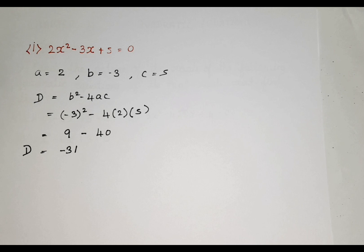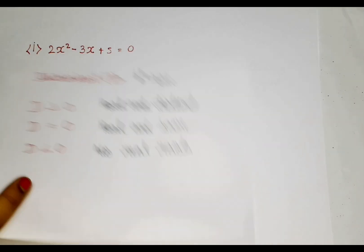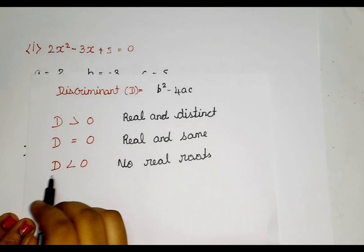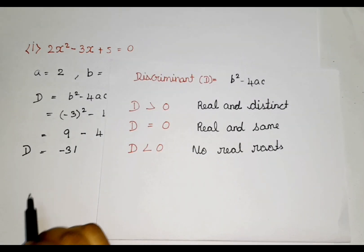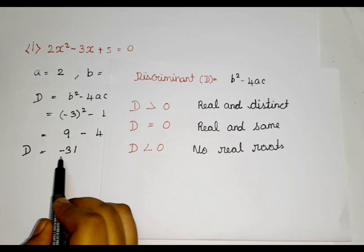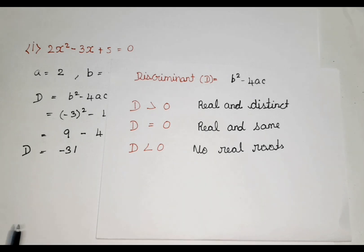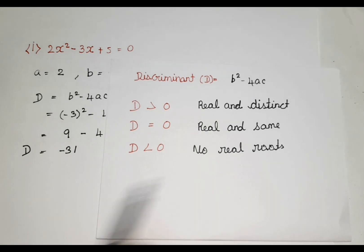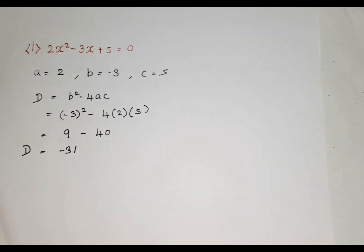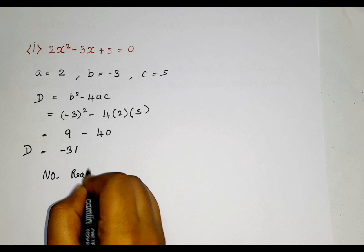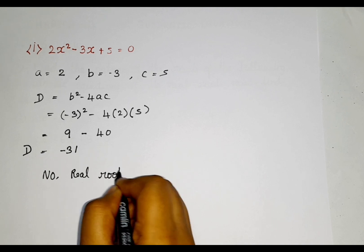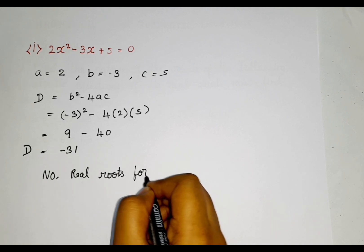Since we got it something like this, according to 0, it is smaller. Why? Because we got a negative value. Negative means smaller. Just because compared to 0 it is smaller, it is no real roots. We can write no real roots for this equation.